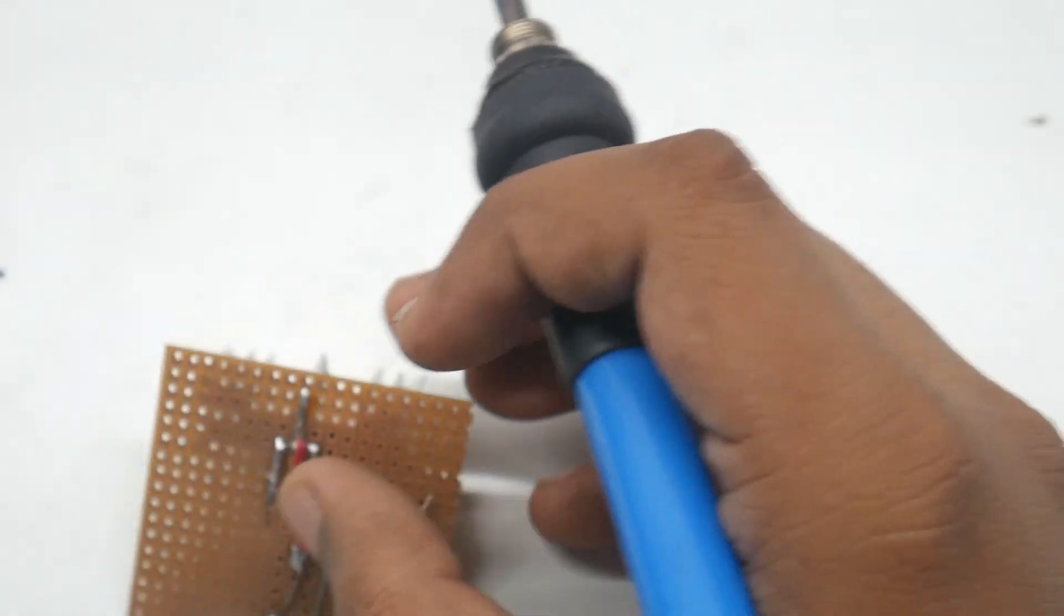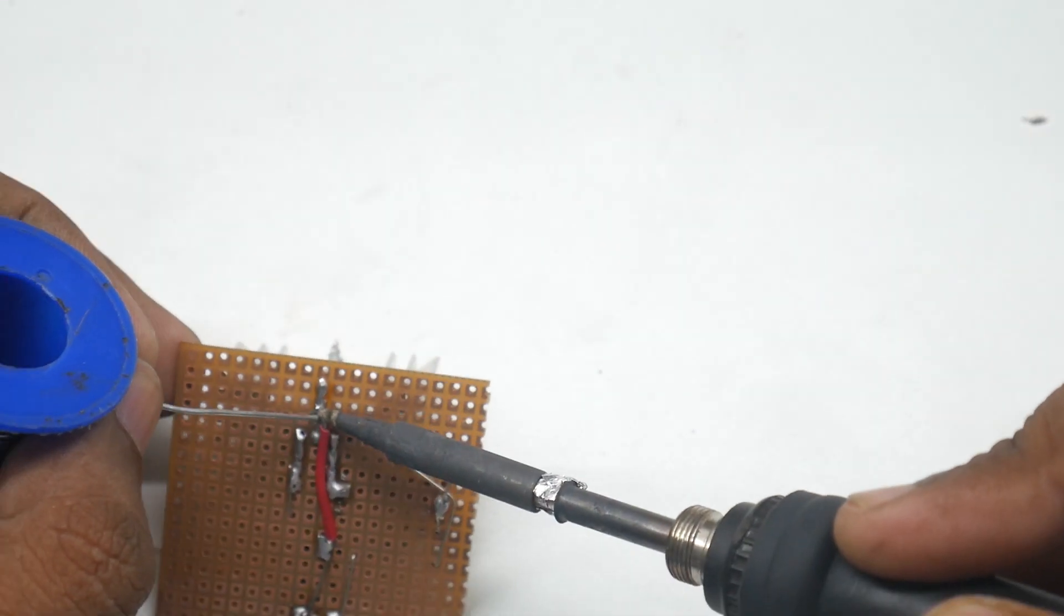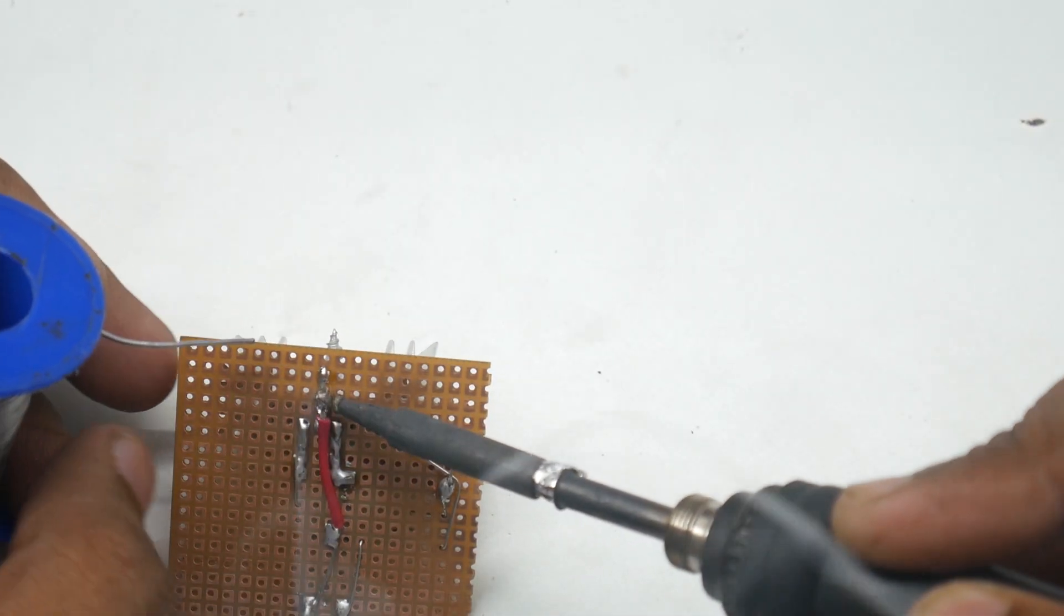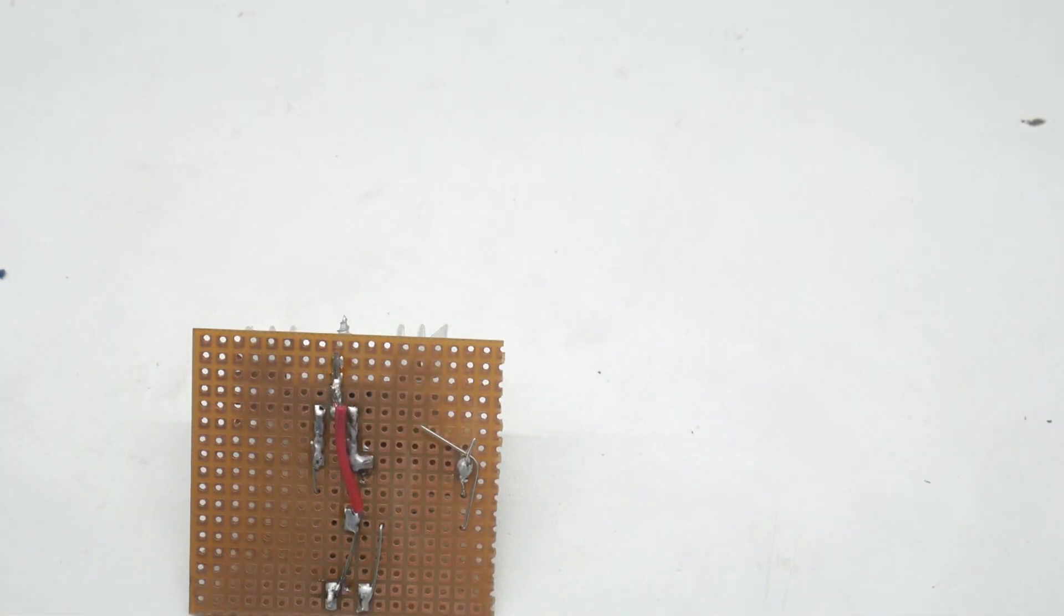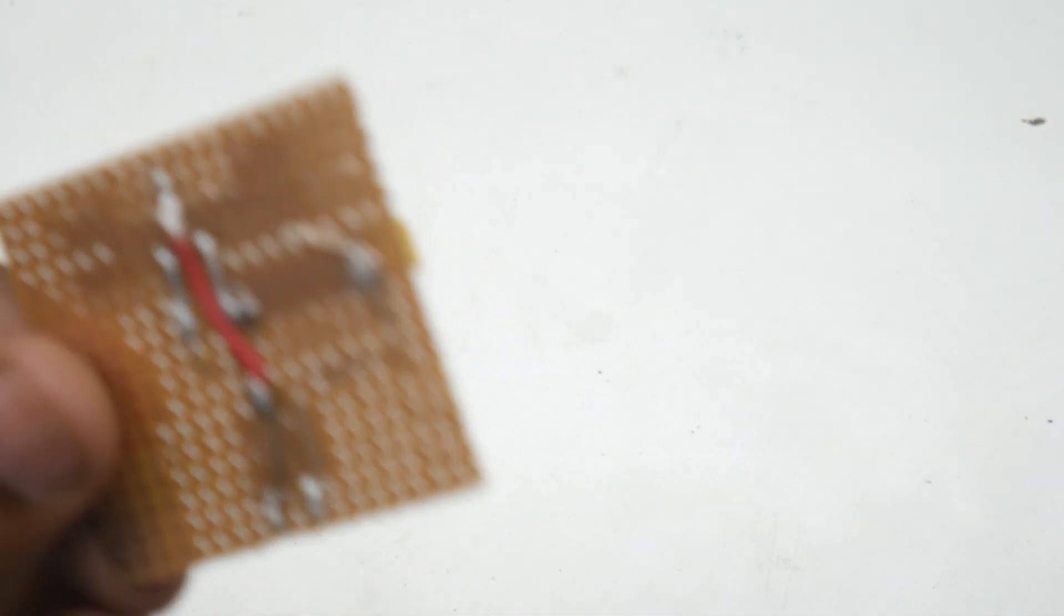Now the gate pin will be connected to pin number 2 of the diac. Now the circuit is finished.